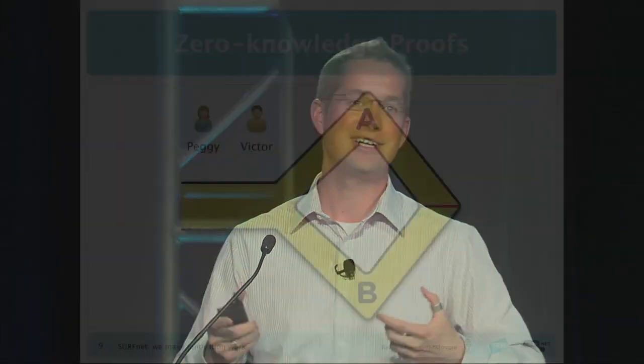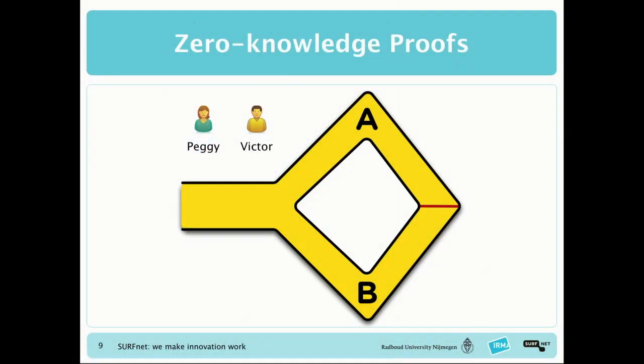These properties rely on novel cryptographic techniques like zero-knowledge proofs and blind signatures. I'm going to be brave and explain zero-knowledge proofs because there's a nice analogy for it.